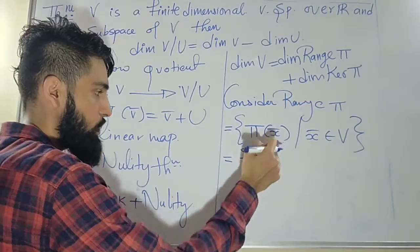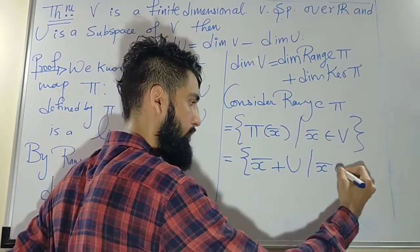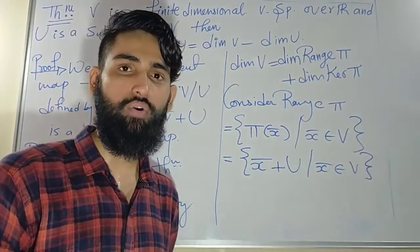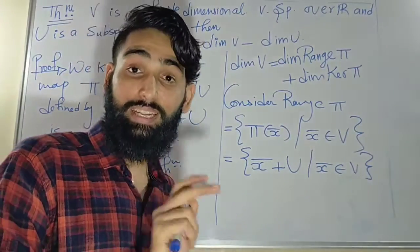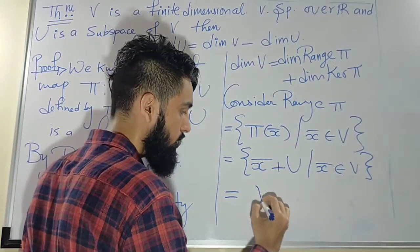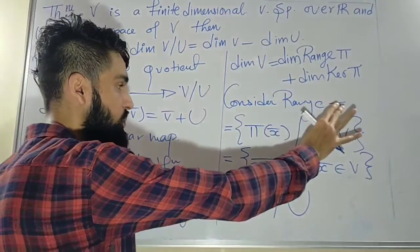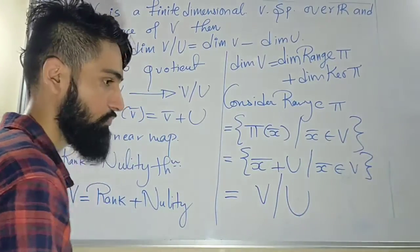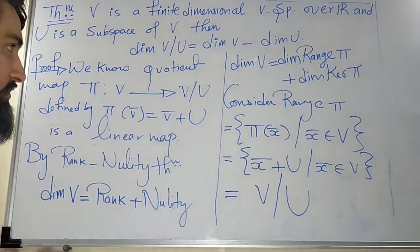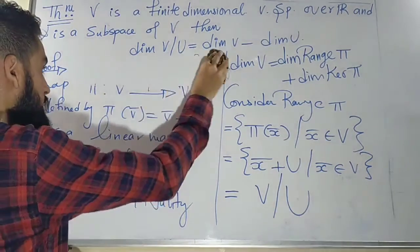By the definition of π, π(x) equals x plus U, where x is an element of V. If you observe carefully, this is nothing but the set of all cosets of U where the representatives are different elements of V — that means it is nothing but the quotient space V modulo U. So the range of π is V/U. Please pause the video and write everything down.